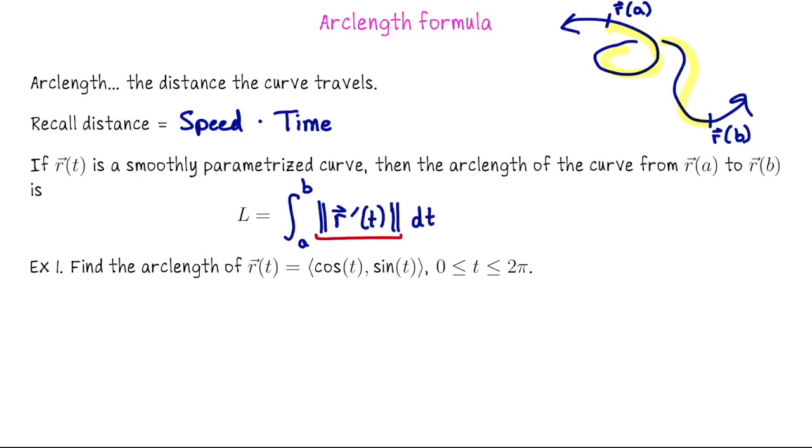So of course, the length of the velocity vector is the speed. And we can think of dt as like a little change in time.